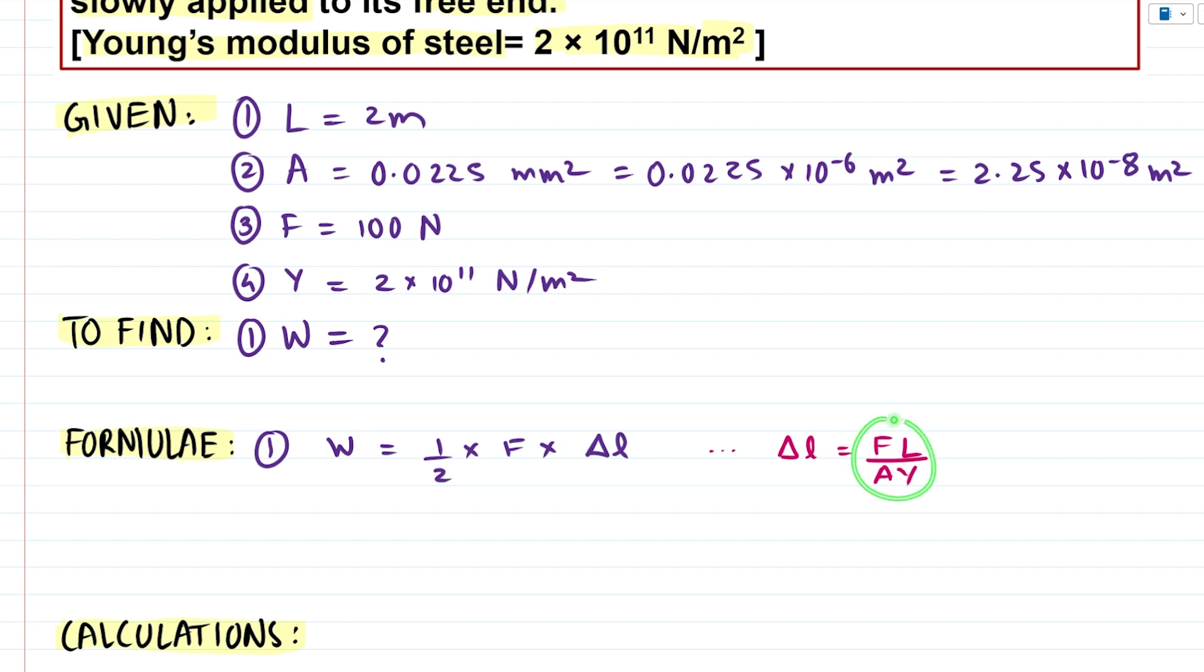Now if we were to substitute this term in place of delta L, we might get an updated formula for our work done. So let me mark this as a second formula for work done. It is ½ × F × delta L expressed in terms of F, L, A, and Y. So this is the formula which will fetch us the value for work done.